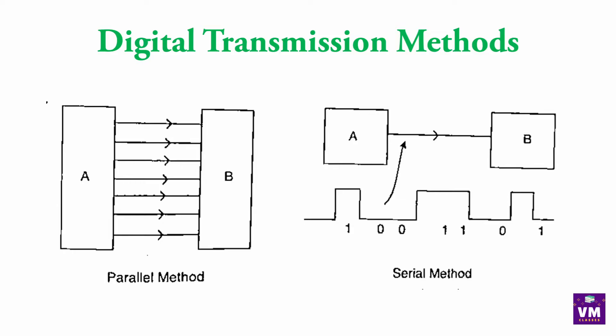Serial method: Second figure में देखो, A और B के बीच में सिर्फ एक ही wire connected है, यानि कि one by one data transmit हो रहा है। A से B में जाएगा, फिर A से और आगे दूसरे point में जाएगा — इस तरह से यह Serial Data Transmission है।